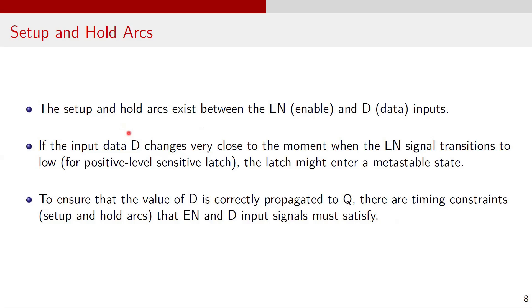Now let's discuss setup and hold arcs, assuming a positive level sensitive latch. Setup and hold arcs exist between enable and data input D. If input data changes very close to the moment when the enable signal transitions to low, the change in D may not be correctly reflected in output Q, or the latch might enter a metastable state. To ensure the value of D is properly propagated to Q, there are certain timing constraints that EN and D must satisfy.